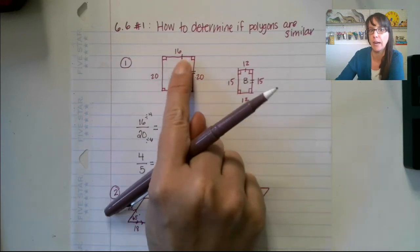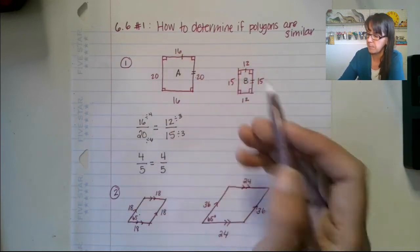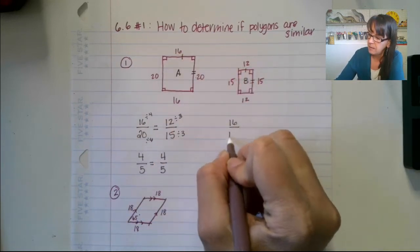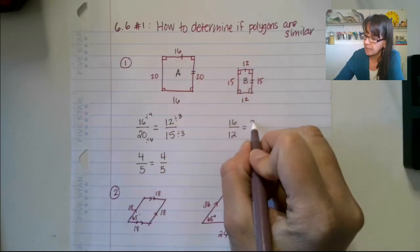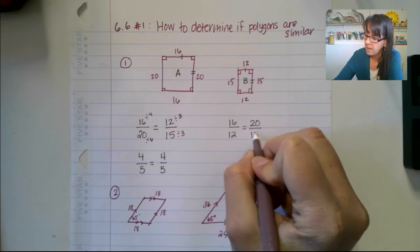This time, what we're going to do is we're going to say, okay, small side A over small side B equals large side A over large side B.